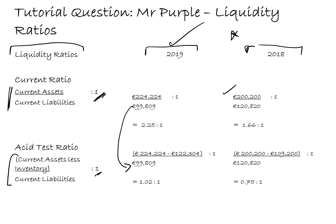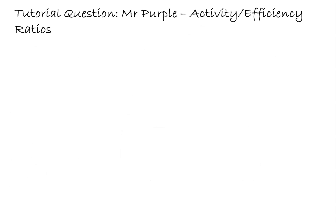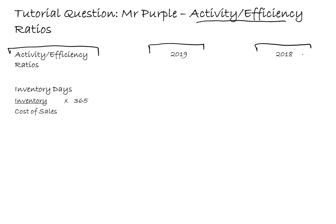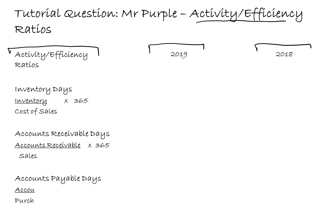Finally we look at the activity - sometimes referred to as efficiency - ratios. The layout is the same: a column for the ratios, then figures for 2019 and 2018. The inventory days formula is inventory divided by cost of sales multiplied by 365. Accounts receivable days is accounts receivables divided by sales multiplied by 365. Accounts payable days is accounts payable divided by purchases multiplied by 365.